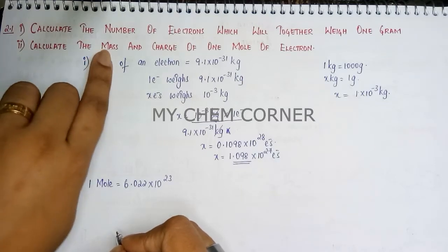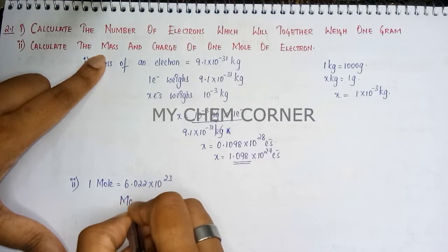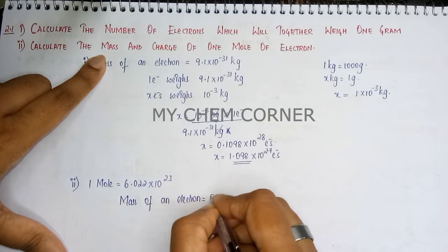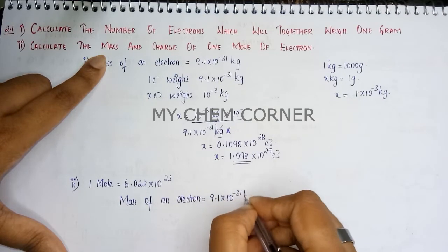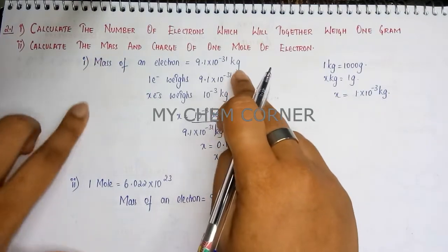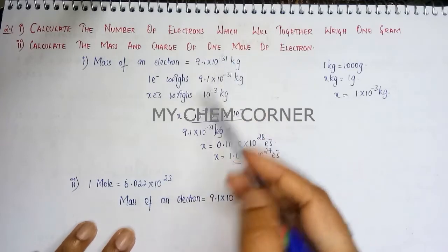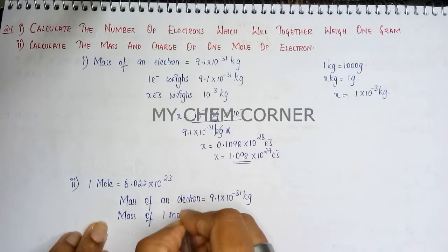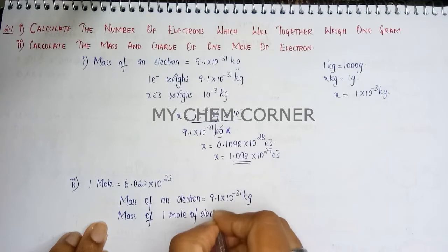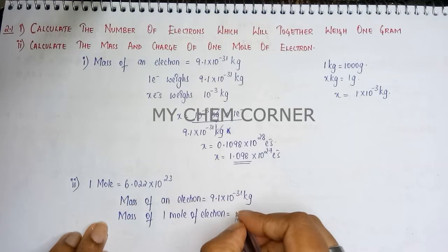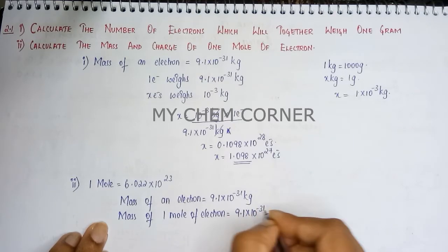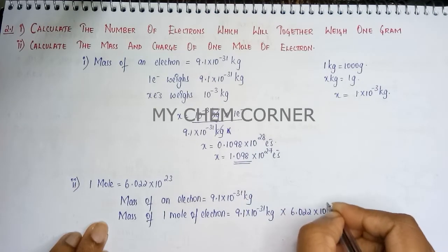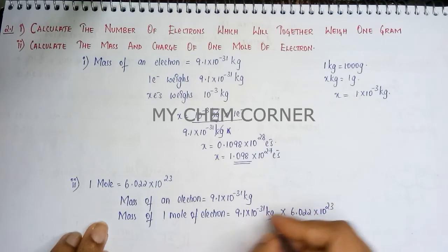The mass of one electron is 9.1 × 10⁻³¹ kilogram, the same standard value from before. Therefore, the mass of 1 mole of electrons equals the mass of one electron multiplied by Avogadro's number: 9.1 × 10⁻³¹ kg × 6.022 × 10²³.